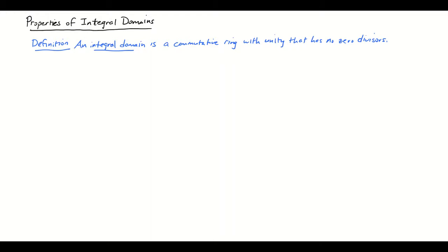In this video we're going to prove a couple of key properties of integral domains. As a reminder, an integral domain is a commutative ring — that is, a ring with commutative multiplication — with unity, so there's a multiplicative identity, and no zero divisors.